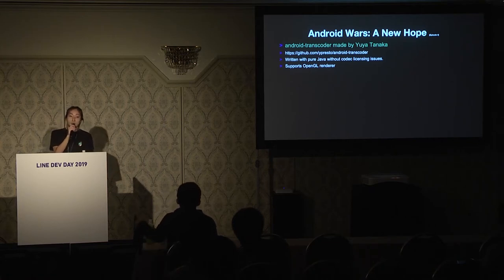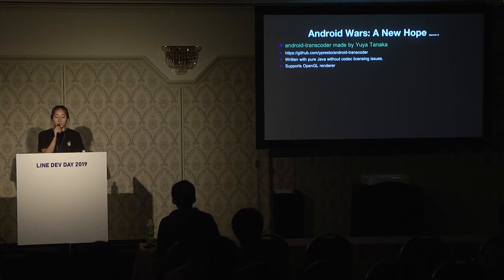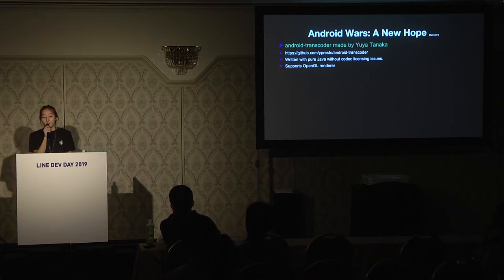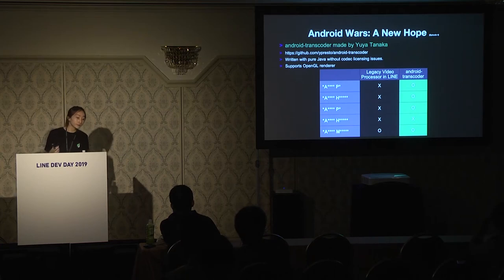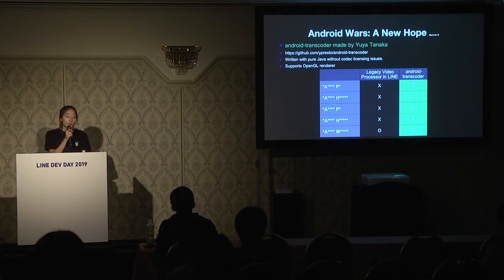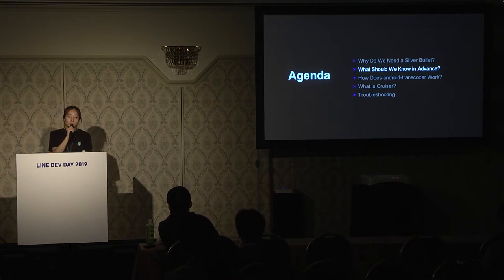Android Transcoder is a library for transcoding video on the Android side. It fully utilizes Android framework APIs, so I didn't need to care about Android device hardware specifications. It also supports an OpenGL renderer, which I will explain later. I tested blacklisted devices with Android Transcoder and found the result was far better than the existing video processor in LINE. I thought it could be a silver bullet.